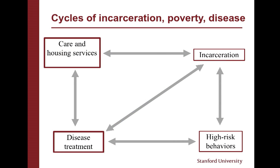We can think about ways to try to disrupt the system. Interventions we could consider include care and housing services, disease treatment — maybe by virologically suppressing people they're less likely to transmit to others — behavioral interventions like condom distribution or needle syringe exchange, and looking at incarceration policy itself. A lot of cities in the United States are starting to think of addiction less as a crime that requires punishment and more as a disease that requires treatment. As addiction has moved into the white middle class in America, there's a lot more political will to address a problem that has haunted our country for decades.